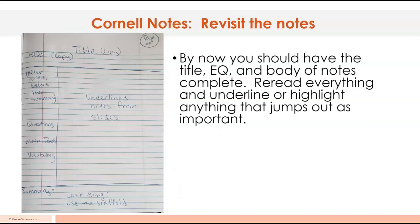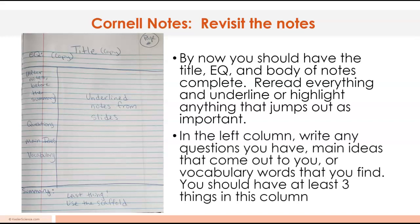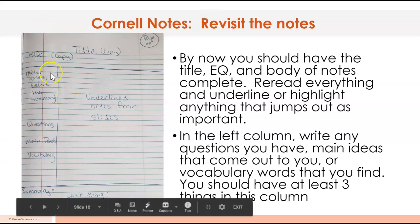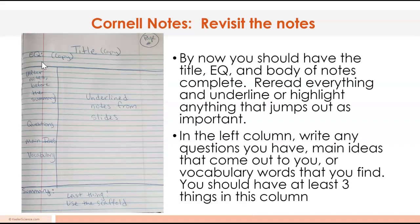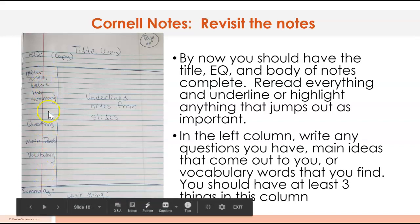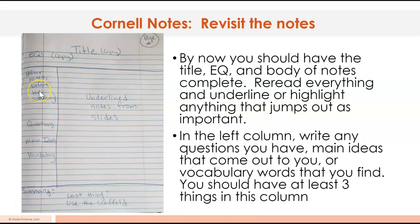Now it's time to revisit those notes. Remember if you want full points on the assignment you need to do this part. You should have the title, the EQ, the body of notes along with that Venn diagram. Take a look at everything, reread everything, underline or highlight anything important that jumps out to you. In the left hand side put any lingering questions that you have, main ideas that pop out, vocabulary words. You should have at least three. Your first one up top next to your Venn diagram is probably the difference between a rock and a mineral.